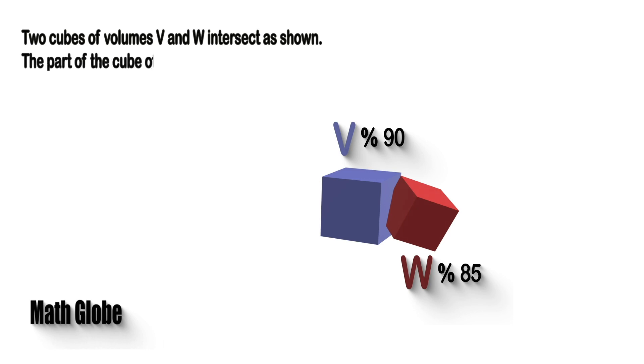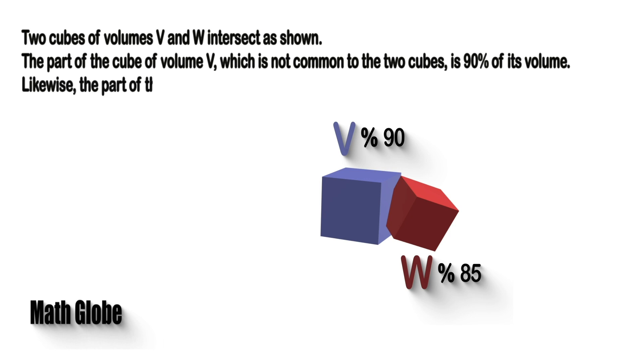The part of the cube of volume V, which is not common to the two cubes, is 90% of its volume. Likewise, the part of the cube of volume W, which is not common to the two cubes, is 85% of its volume.